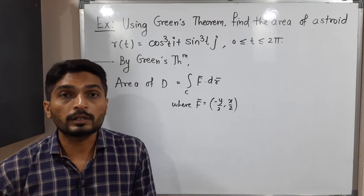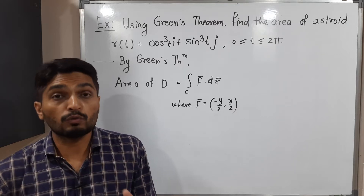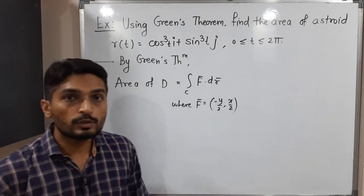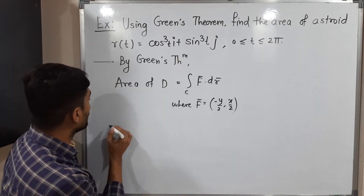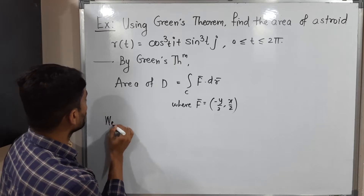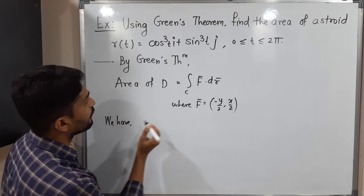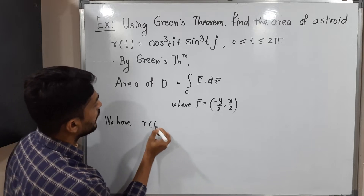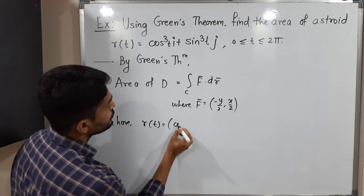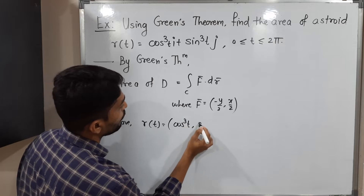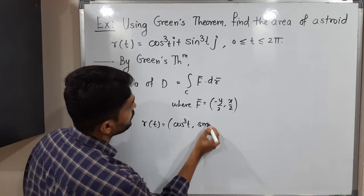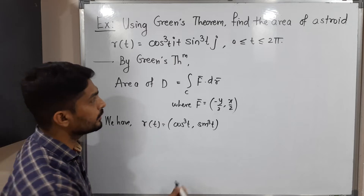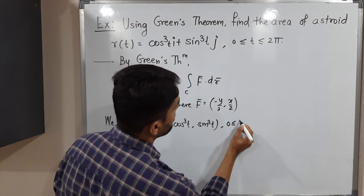The first important thing is the parameterization. Fortunately the problem itself gives us a parameterization, so we use it directly. The parameterization of curve C — that is, the asteroid — is r(t) = (cos³t, sin³t), and t varies from 0 to 2π.